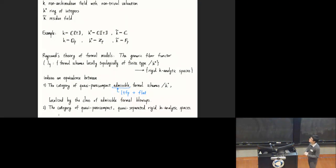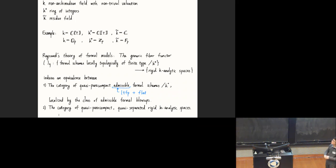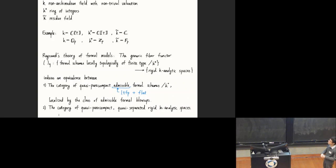Raynaud's theory of formal models—suggested by Grothendieck, with Raynaud being a student of Grothendieck—is really a combination of works by many people: Raynaud, Bosch, Lütkebohmert, and others. One can state Raynaud's theory in this form: the generic fiber functor from formal schemes locally topologically of finite type over the ring of integers to rigid K-analytic spaces induces an equivalence between the category of formal schemes with some finiteness property, localized by the class of admissible formal blow-ups, and the category of analytic spaces with mild finiteness properties.